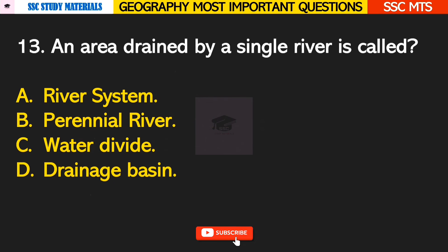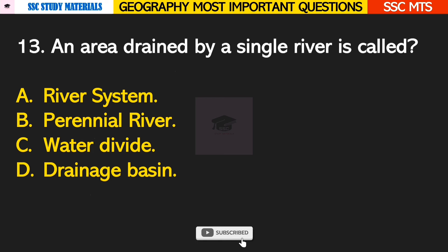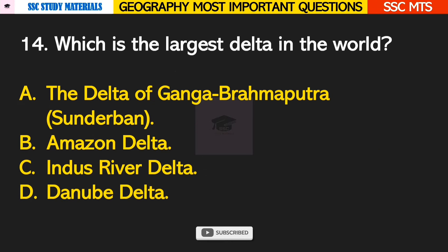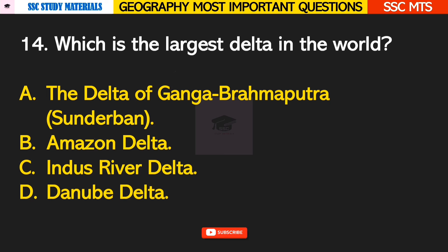Question number 13: an area drained by a single river is called? Answer D — it is called a drainage basin. Question number 14: which is the largest delta in the world? Answer A — the delta of Ganga-Brahmaputra, the Sundarbans.